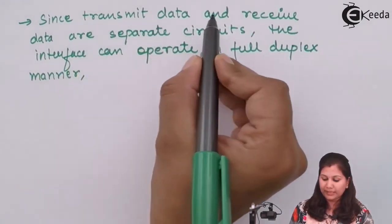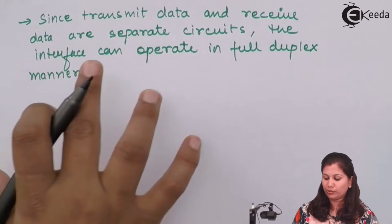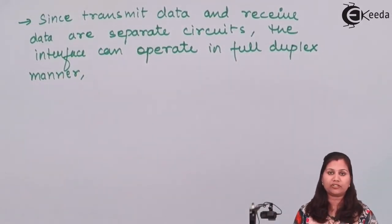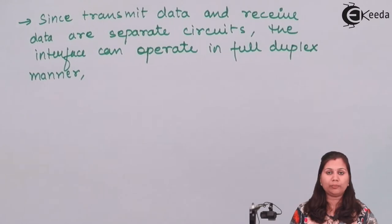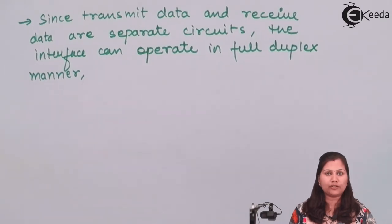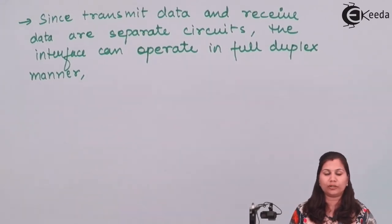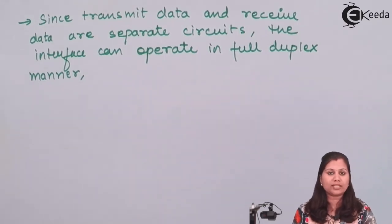Because the transmit data and receive data are separate circuits, the RS-232 interface can operate in full duplex manner — in both directions simultaneously. RS-232 supports both synchronous and asynchronous communication types, and in both modes it can work in full duplex mode as well.